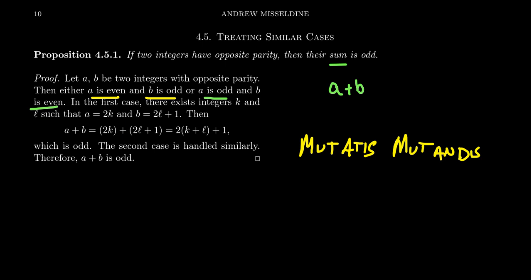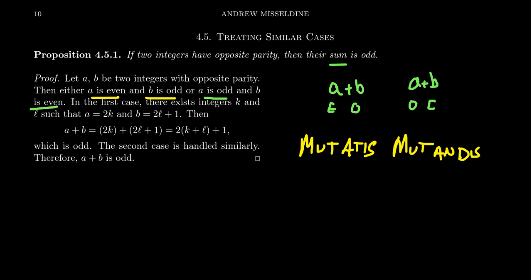We're adding together numbers, so we have two possibilities: a even and b odd, or a odd and b even. In reality, since addition is commutative, if the odd number comes first you could always switch the order so the even one is first. So the two cases are so similar it may be justifiable not to consider the second case separately.